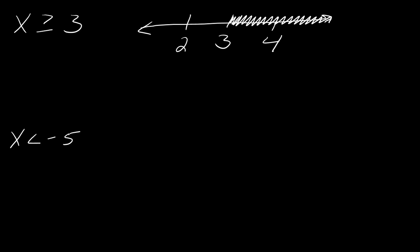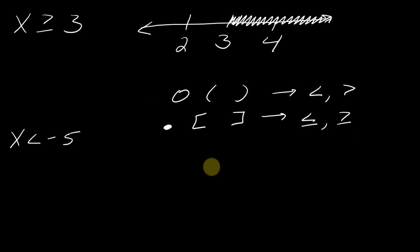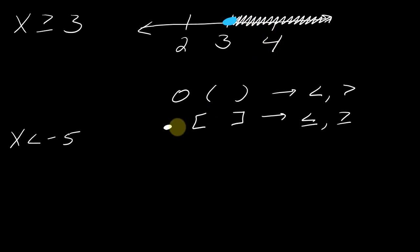At the 3 on the number line, you need to represent what sign was used. The shorthand: we use an open dot or a rounded bracket for less than or greater than (no equal to). If it has the equal to on it, it is including that number, so we use a closed dot or a square bracket. Since this is greater than or equal to, I'm going to put a closed dot right here.